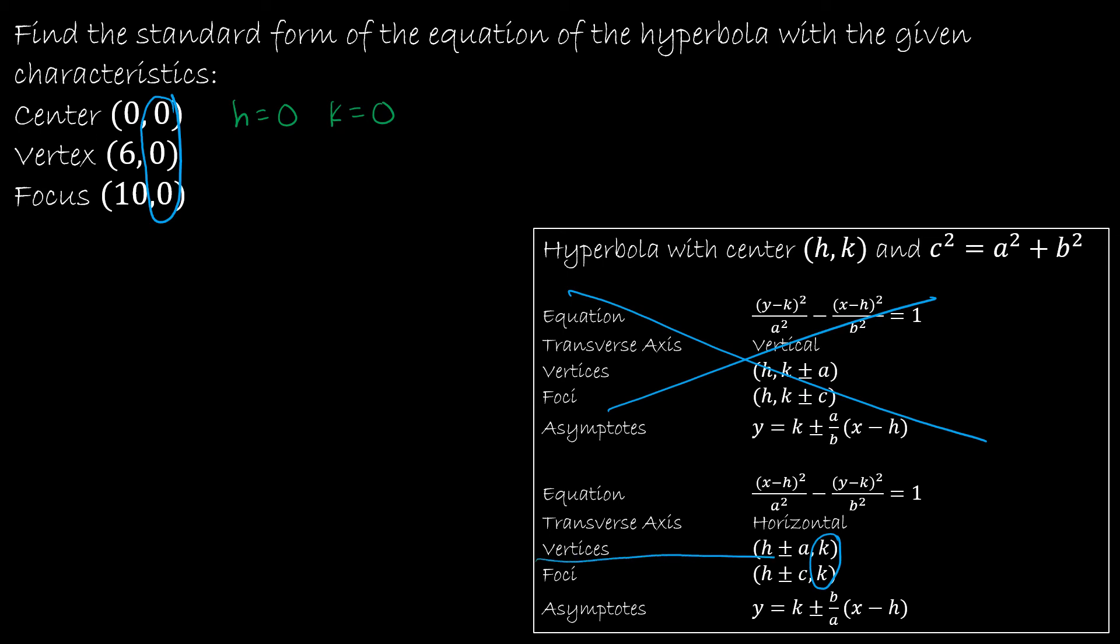I also know that the vertex, to find a vertex in that format, I'm going to take H plus or minus A comma K. And so I already know that H is 0 and that K is 0. And so my question is, what would A have to be in order for a vertex to be 6? Well, obviously, A would have to be 6.